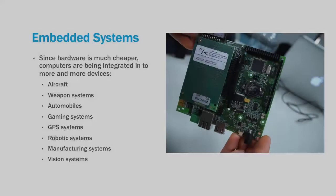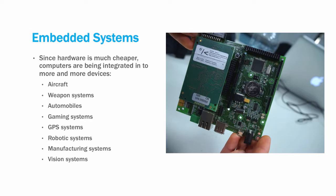The next item we're going to talk about is embedded systems. Since computer hardware is much cheaper, computers are being integrated into a wide variety of devices. These include aircraft, weapon systems, automobiles, gaming systems, GPS systems, robotic systems, manufacturing systems, and vision systems, just to name a few. More devices are being included through the use of a technology called Internet of Things, or IoT. You'll be hearing a lot more about this technology as it matures.